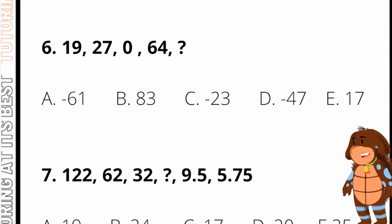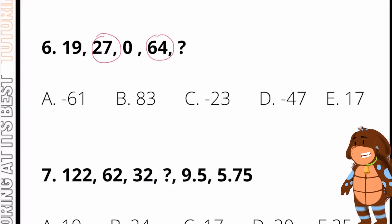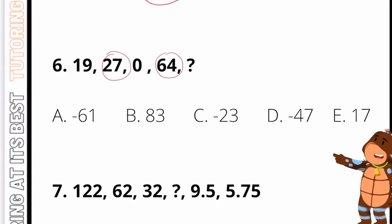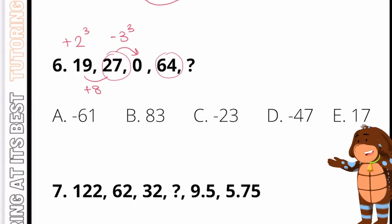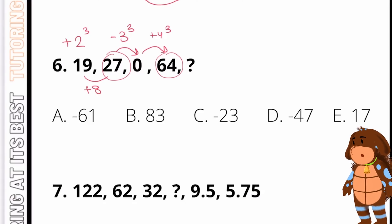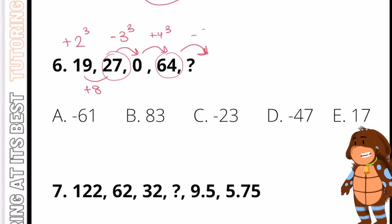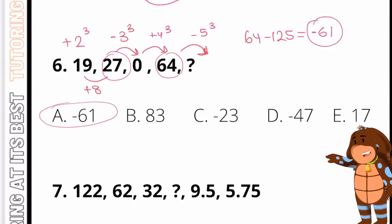For question number six, the numbers are increasing, and you should notice that 27 and 64 are cube numbers. To get from 19 to 27, the difference is 8 — that's adding two cubed. Then from 27 to 0, we minus three cubed, because three cubed is 27. Then we add four cubed: from 0 to 64. And from 64 to the next number, we minus five cubed, which is 64 minus 125, giving us minus 61. And our answer is A.